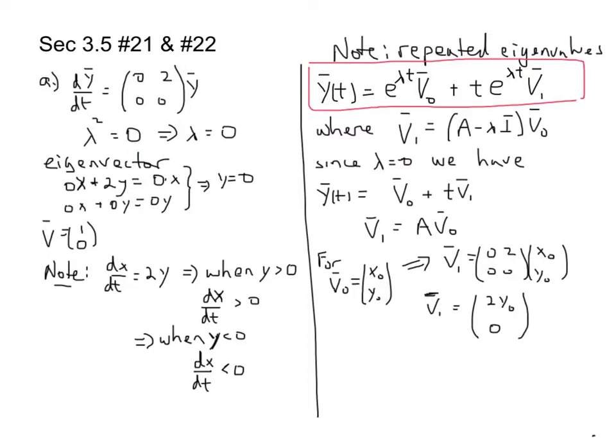And v1 is just A times v naught. Given that v naught is (x naught, y naught), it's an initial condition, we can see that v1 being A times v naught is just (2y naught, 0).